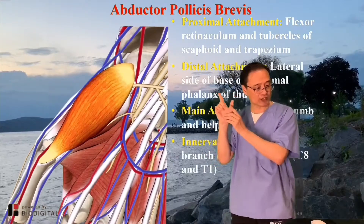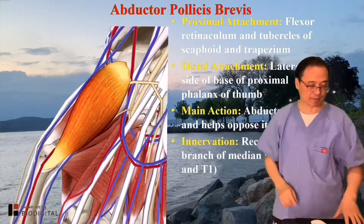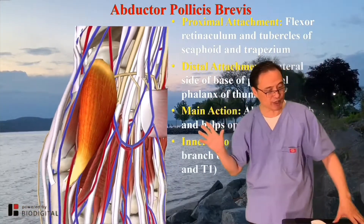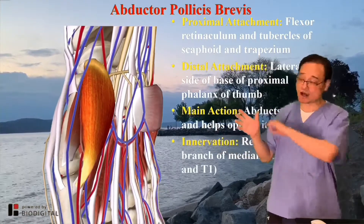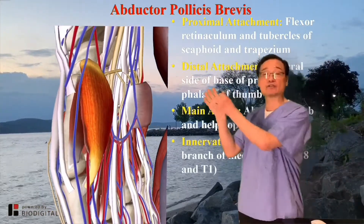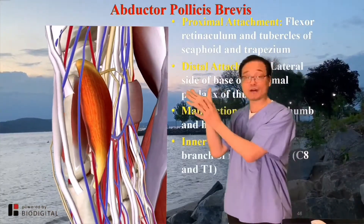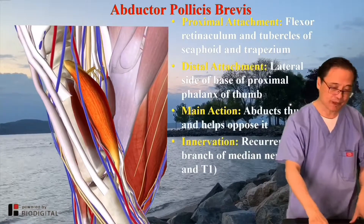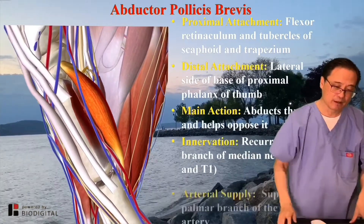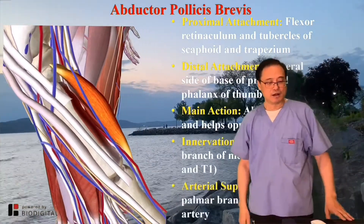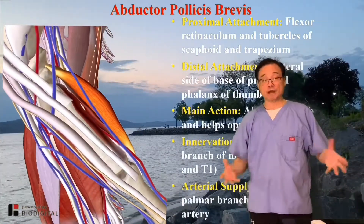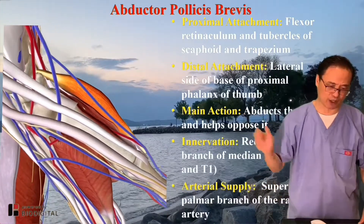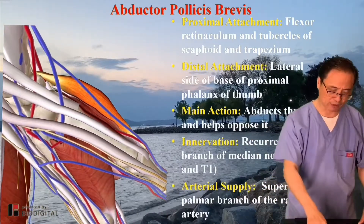I will get into more details on that, but for now remember: the recurrent branch of the median nerve generally covers your thenar compartment. Arterial supply: superficial palmar branch of the radial artery.